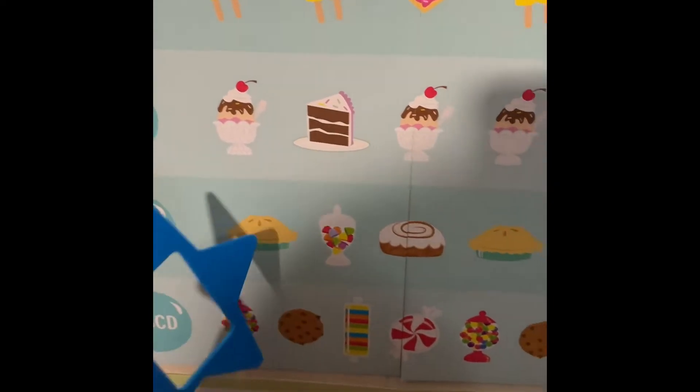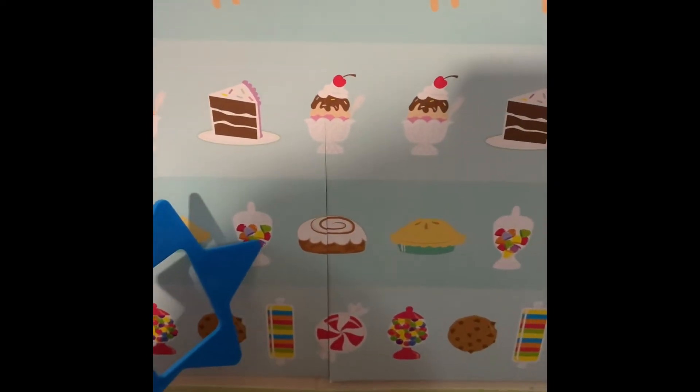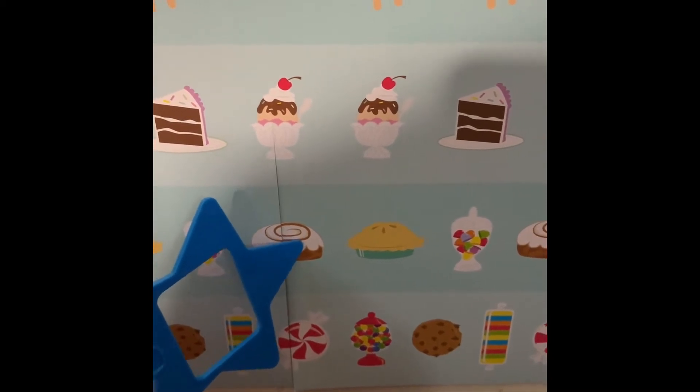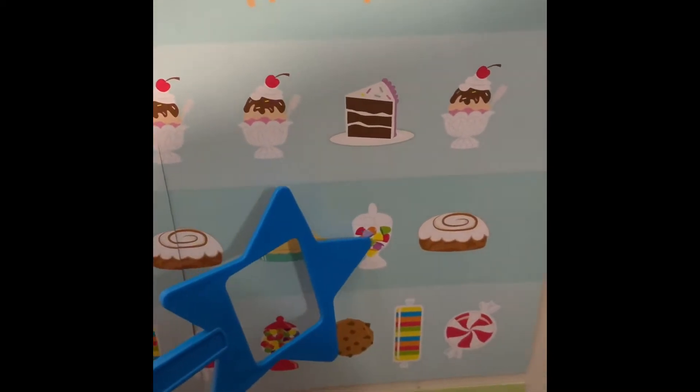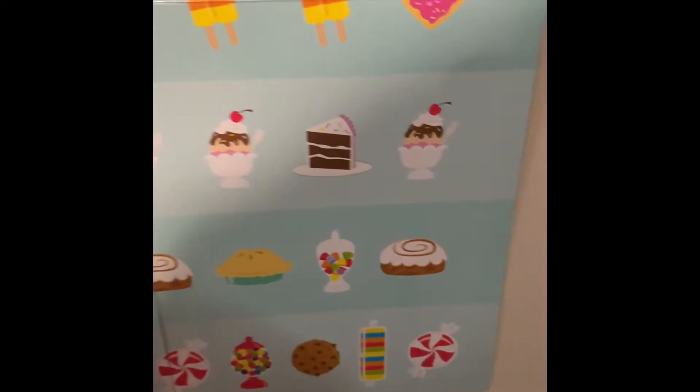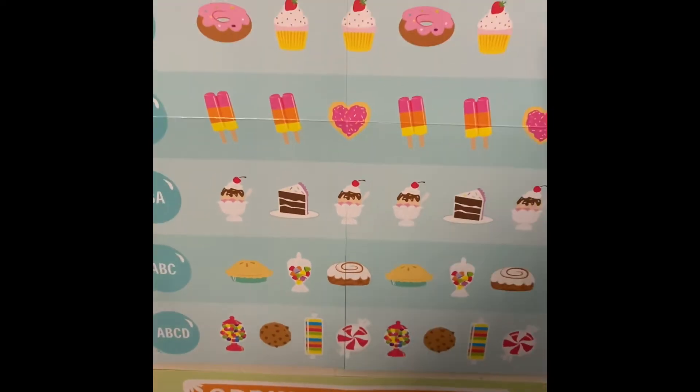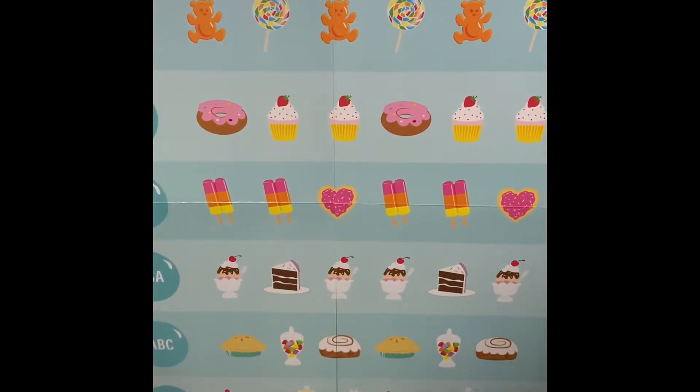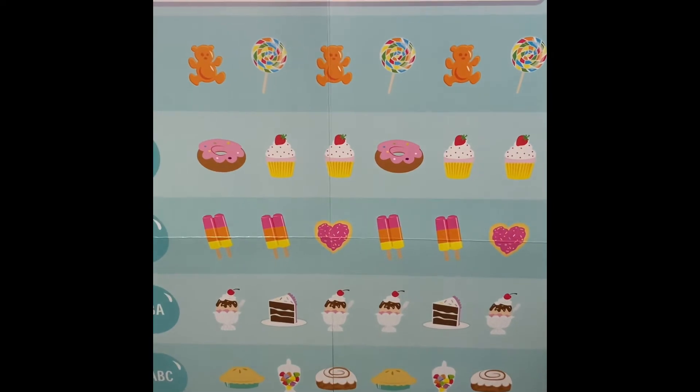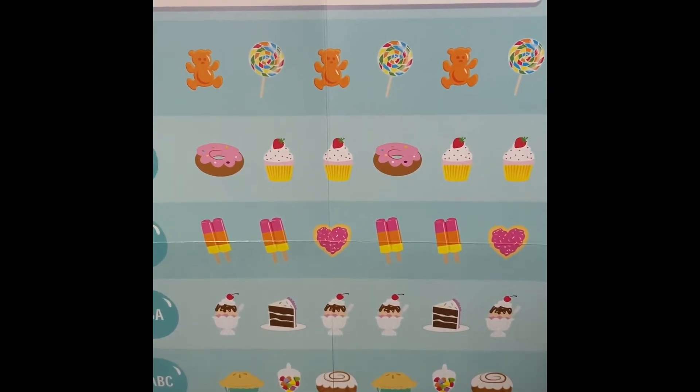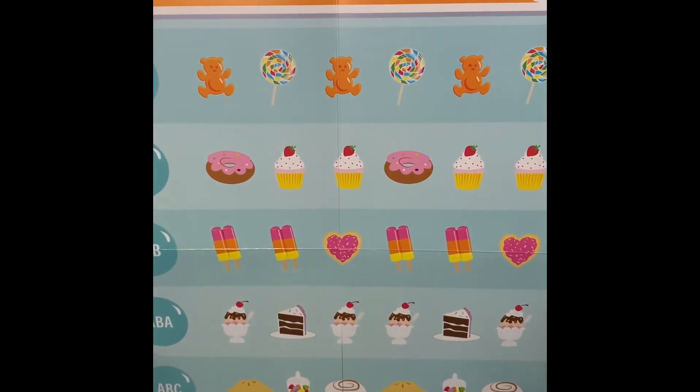Let's see this pattern. Pie, candy, bun. Pie, candy, bun. Do you think you can do an ABC pattern with Miss Evie? I want you to go gather some stuff with Mommy and Daddy while Miss Evie gathers her stuff and we get ready to do our pattern.